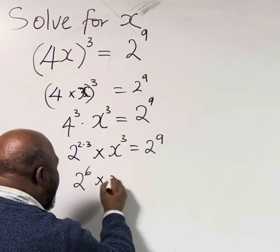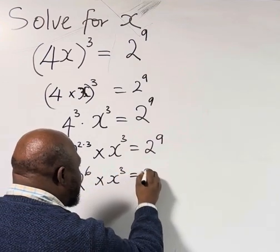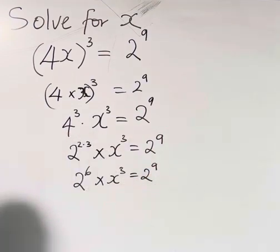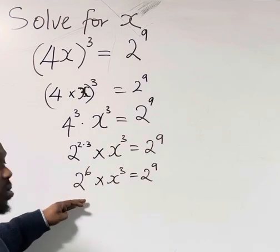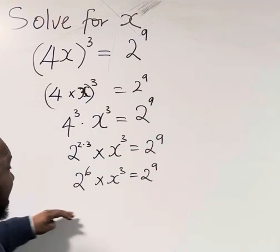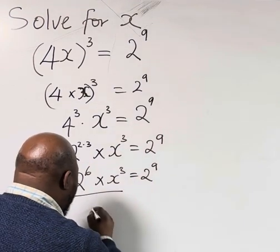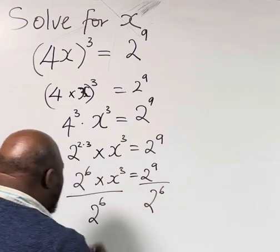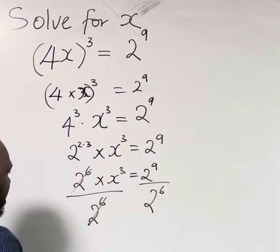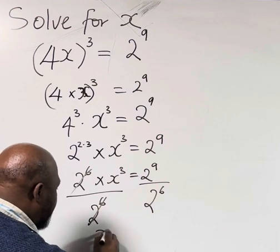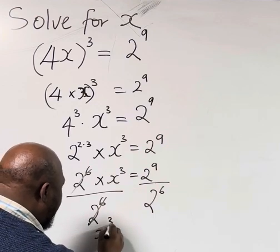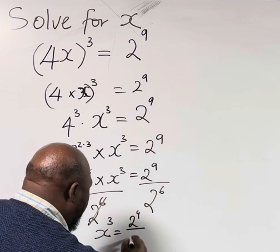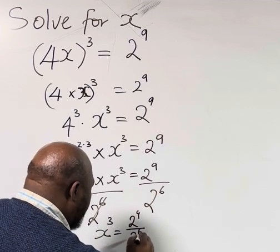Now let's take this to the other side. Divide both sides by 2⁶. If you do that, this will go away, so we now have only x³ = 2⁹ ÷ 2⁶.